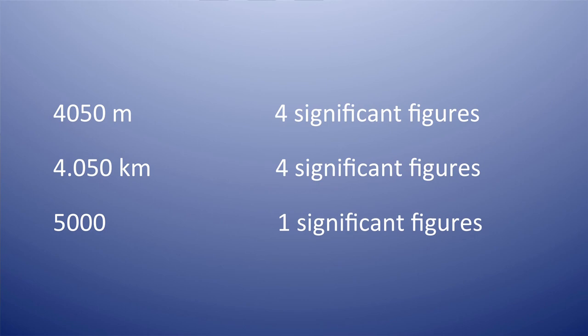Rule six: in a whole number, all the zeros to the right of the last non-zero digit are not significant. For example, 5000 has only one significant figure — only 5 is significant, but all three zeros are not significant. When a whole number is not a measurement and does not contain any unit, only the non-zero digit is significant and the zeros to the right are insignificant.